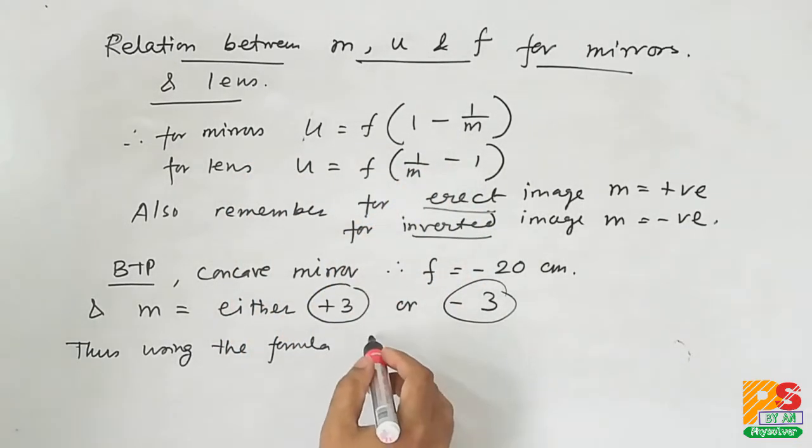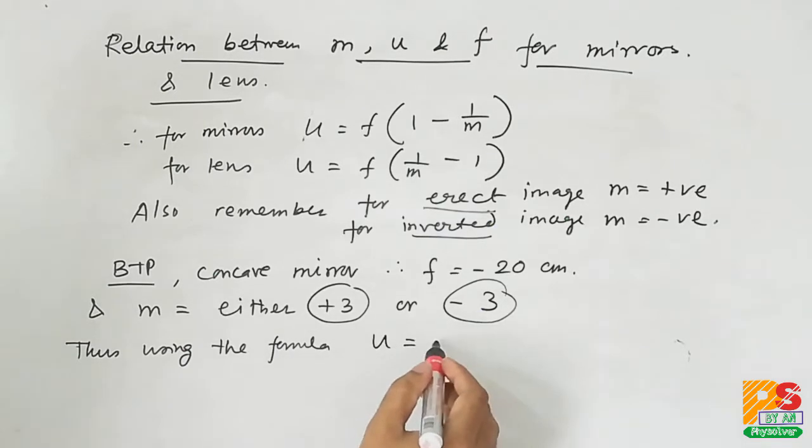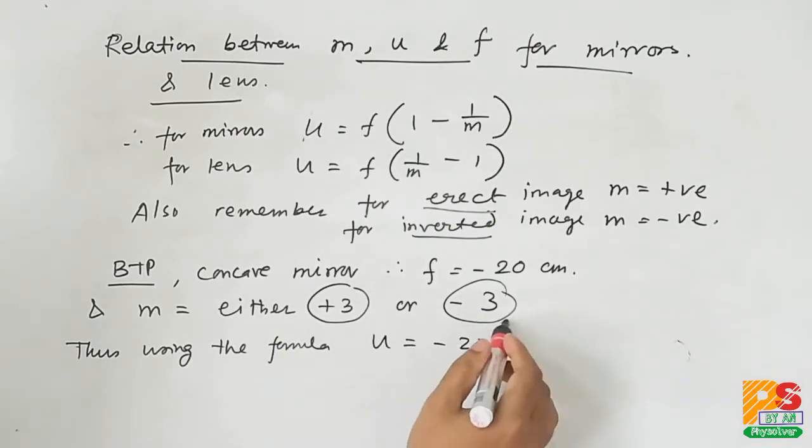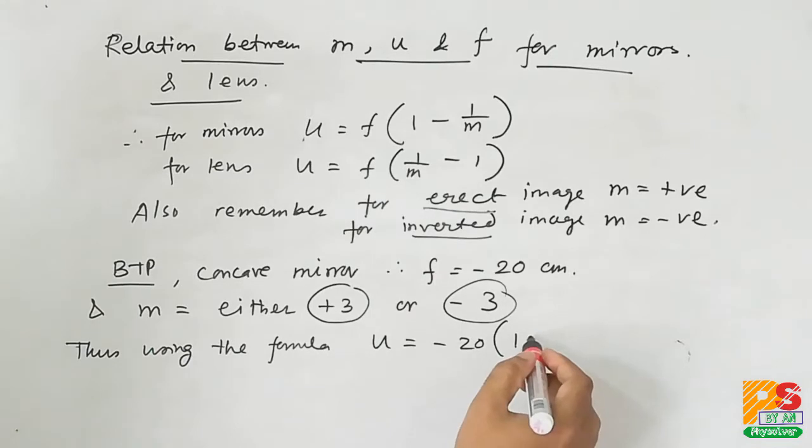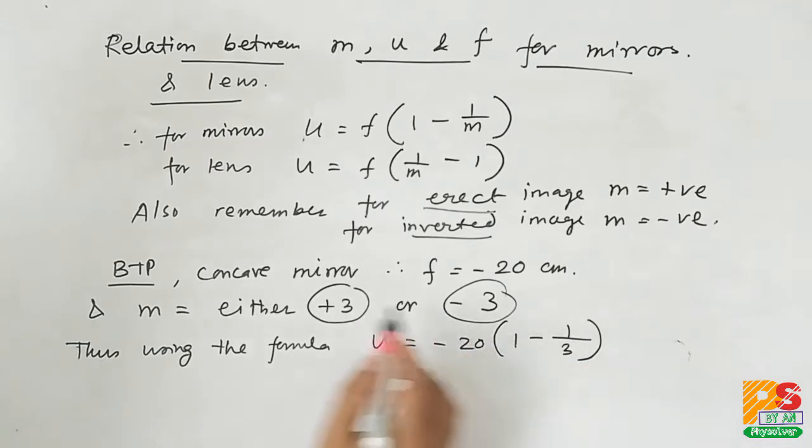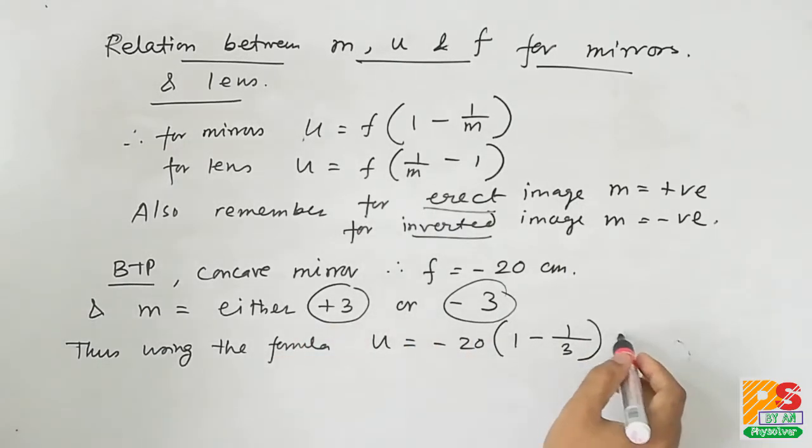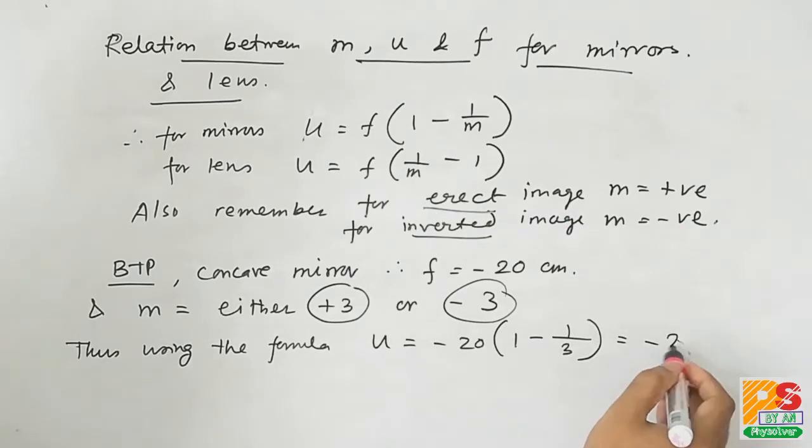For mirror we have to use the first formula, putting the values. If m is positive 3, that is the final image is erect, then the answer is minus 40 by 3 centimeters.